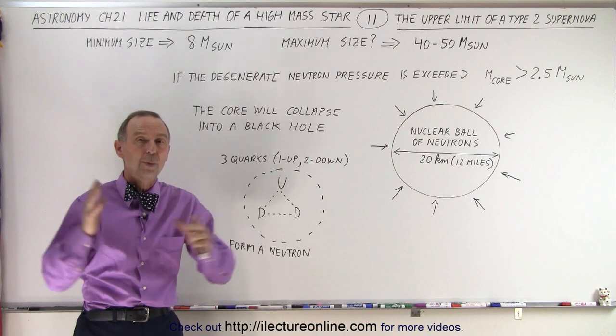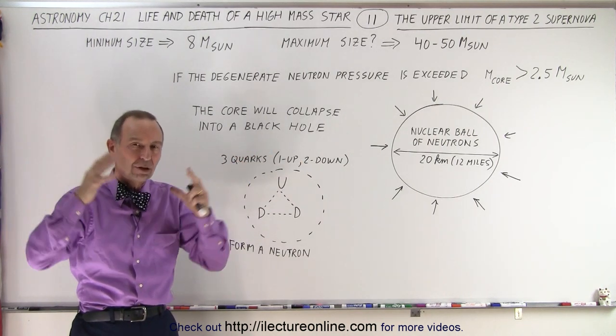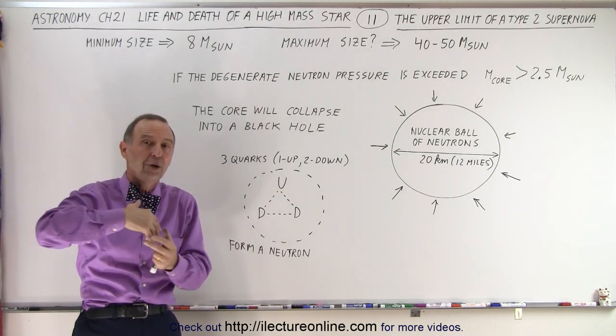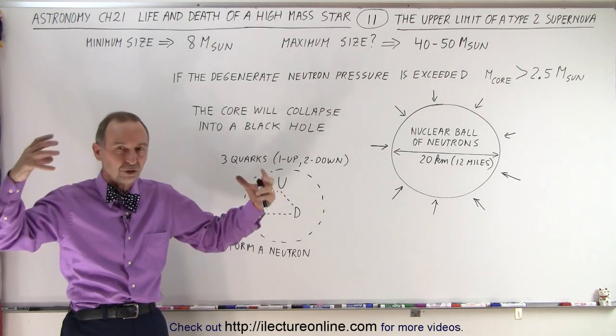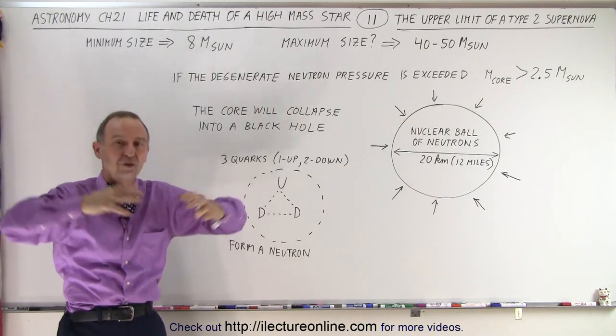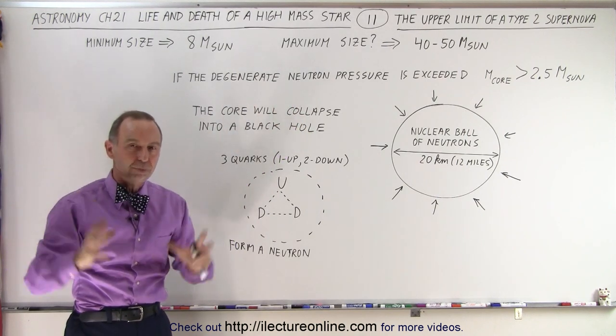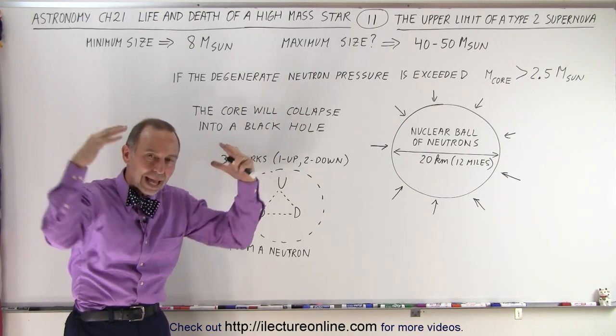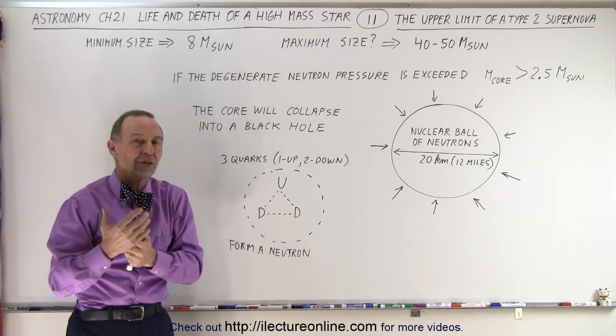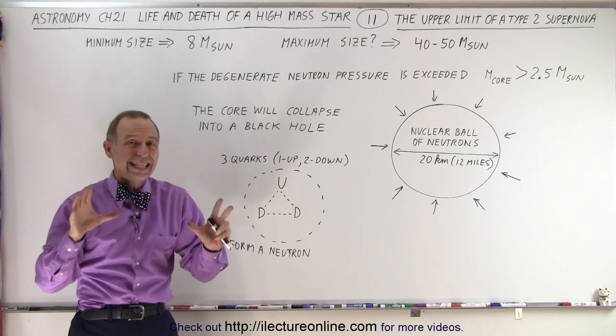Initially yes, but when the core is collapsing and the electron degeneracy pressure no longer prevents it from coming together, and all the protons and electrons are squeezed into neutrons and the neutrinos are made and scream out of the star taking away a lot of the energy from that implosion—when that collapsing core of the star has a certain minimum mass, the neutron degeneracy pressure will not withstand that collapse.